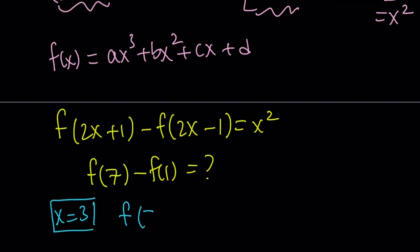So if I replace x with 3, I get f of, I mean, if I replace x with 3, then I get f of 7 minus f of 5 equals 3 squared, which is 9. Awesome. But not so awesome because I don't need f of 7 minus f of 5. I need f of 7 minus f of 1. So is there any way I can get rid of f of 5 or the negative f of 5?